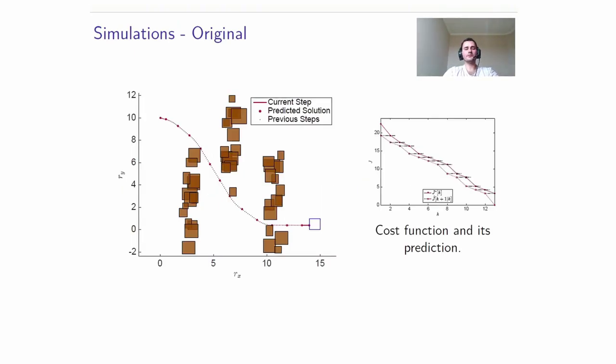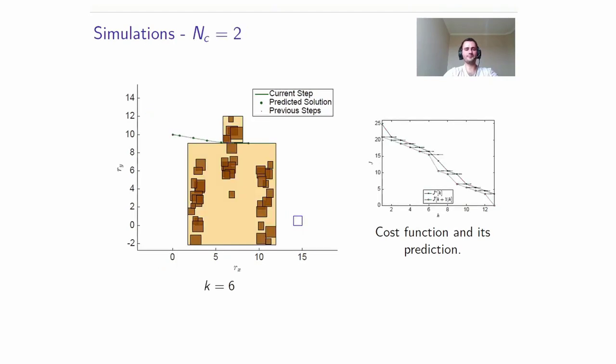Simulation examples are used to illustrate the proposal. First, we would like to show the original one cluster strategy. Please notice that there are 45 obstacles, and the vehicle goes from the left-most position to the right-most blue target set. On the right-hand side, we see the cost at every iteration and its prediction at the previous step. There is no mismatch here.